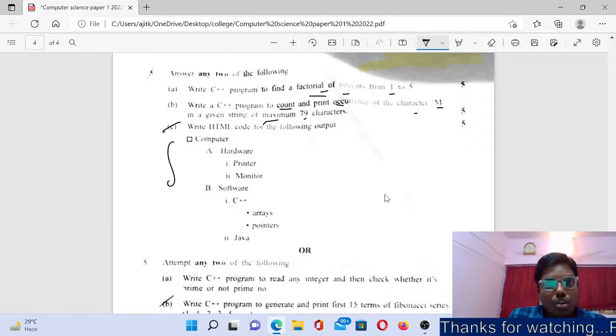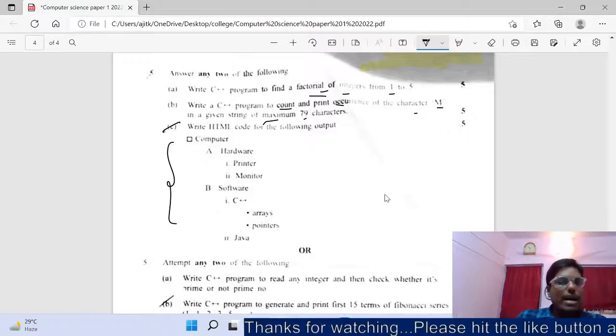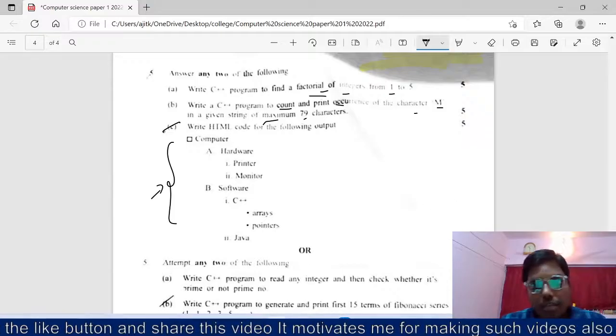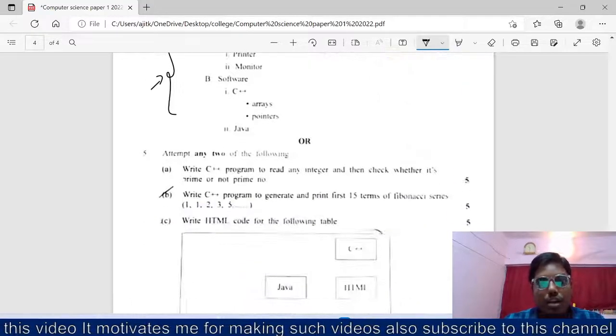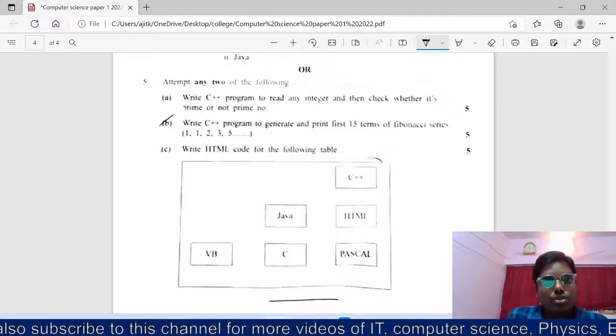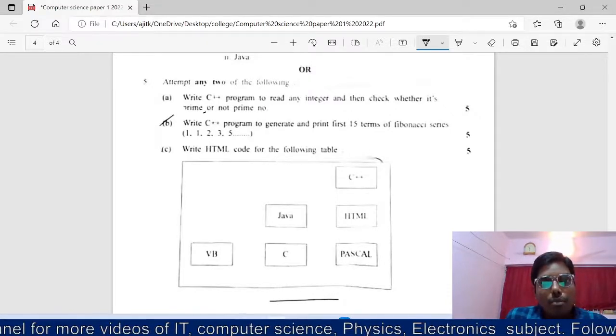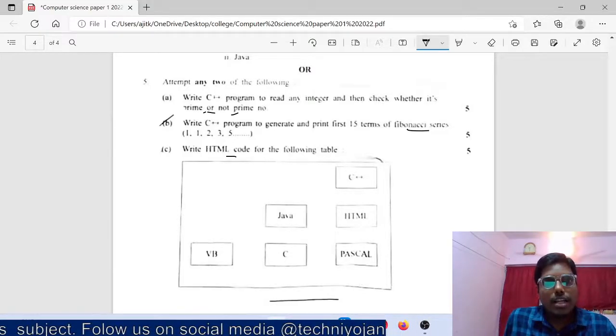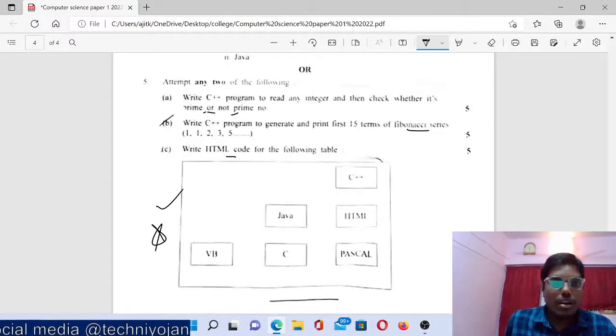This is the HTML code. This is with the same pattern. We do have the solution, you can check it out, or else I will again give the paper solution if you ask me in the comment section. C programs also: prime or not, this is the main question. Then Fibonacci series, then HTML code. This also I will let you know all the solutions.